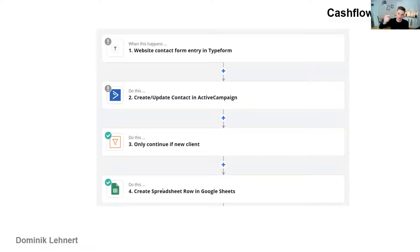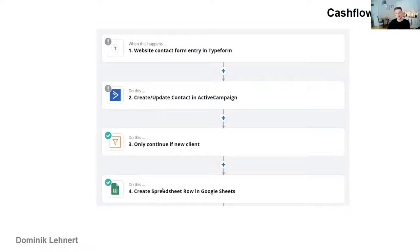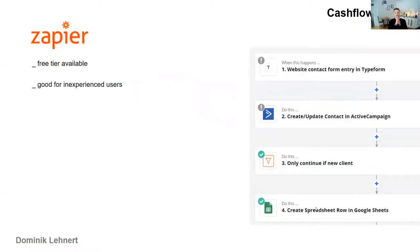Now we'll go into detail on each one. First is Zapier. This is a picture of what it looks like when you create a workflow — it's a straight top-to-bottom vertical alignment, one linear workflow. In this example, you get contact information on your website, put it into your CRM so no one has to copy it manually, check if it's a new client, then maybe put it into a spreadsheet. Zapier has a free tier so you can try it out and actually get some usage out of it.